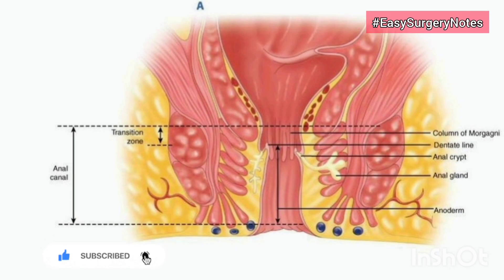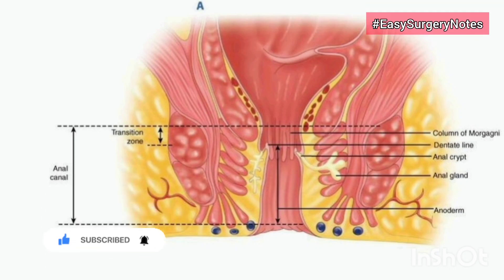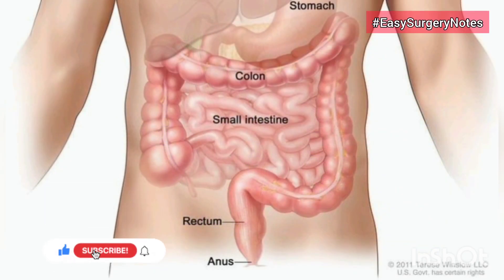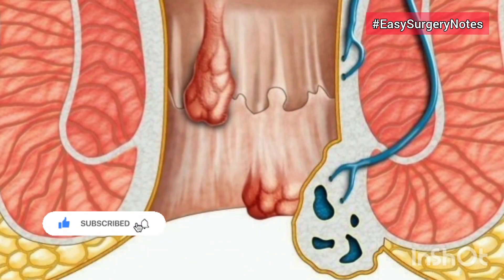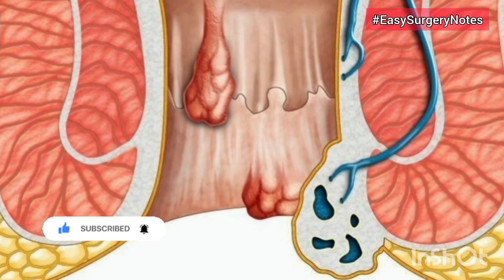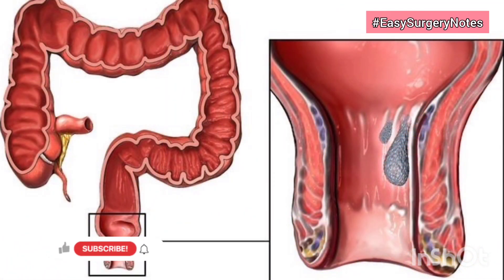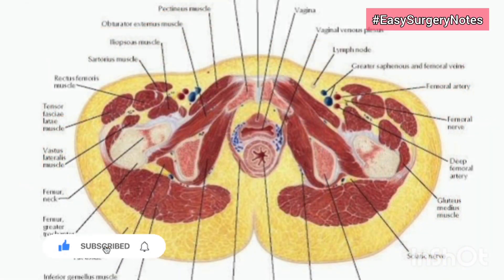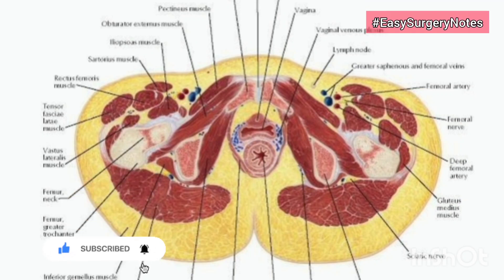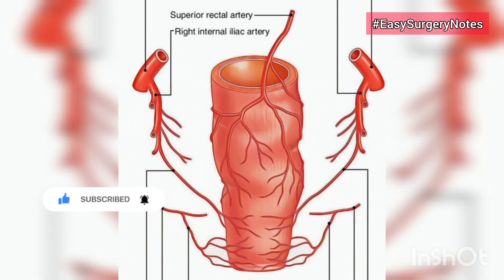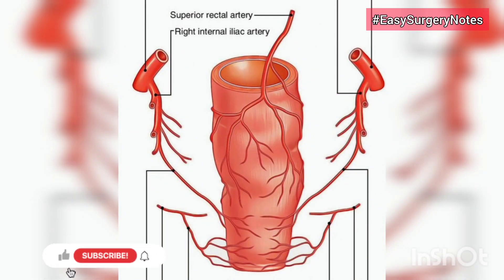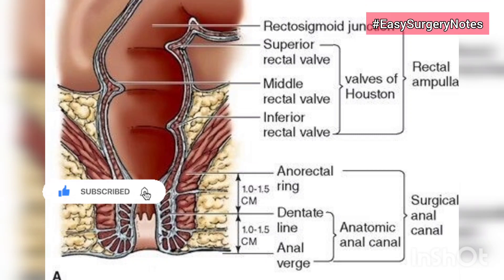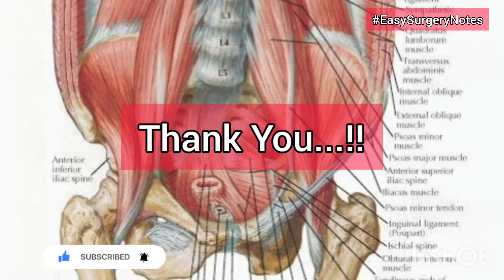Functions: the rectum is functionally divided into two parts above and below the middle transverse fold. The upper part develops from the hindgut, lies above the middle fold, and acts as a fecal reservoir. The lower part develops from the cloaca, lies below the middle fold, and is normally empty except during defecation; being sensitive, its distension causes the desire to defecate. Anus: it is the surface opening of the anal canal, situated 4 centimeters below and in front of the tip of the coccyx, in the cleft between the two buttocks. The surrounding skin is pigmented and thrown into radiating folds containing a ring of large apocrine glands. The sphincters keep the lumen closed in the form of an anteroposterior longitudinal slit, expanding only during expulsion of feces.